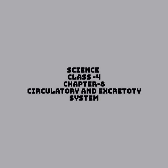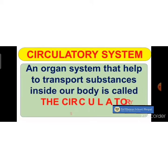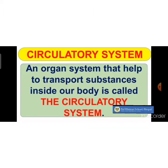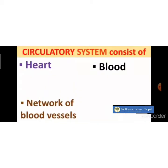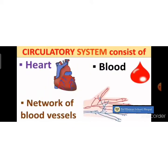Welcome everyone. Today we study about Chapter 8. The circulatory system is an organ system that helps to transport substances inside our body. It consists of three parts: heart, blood, and a network of blood vessels.